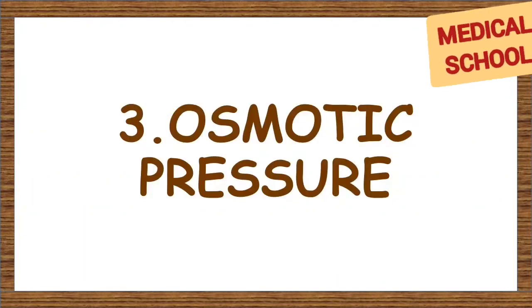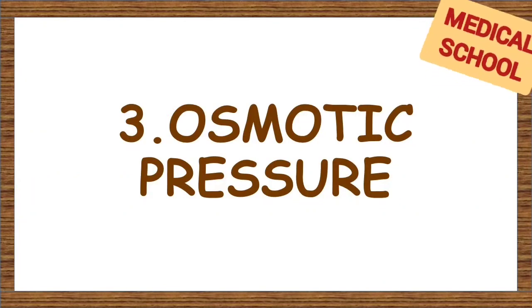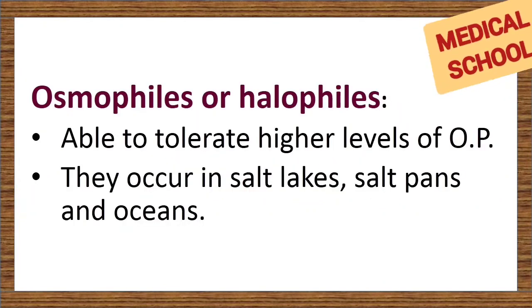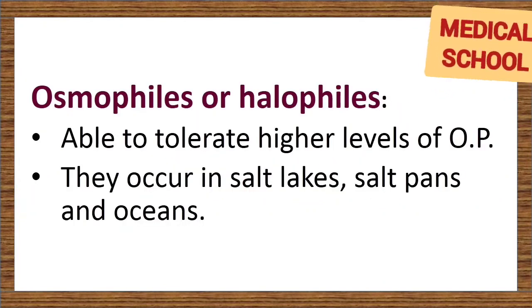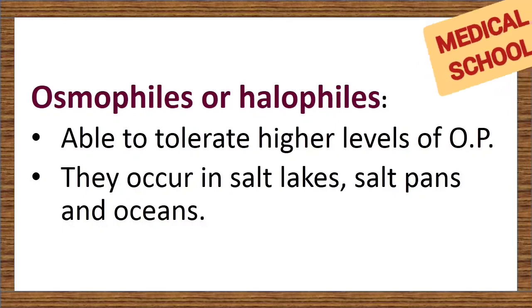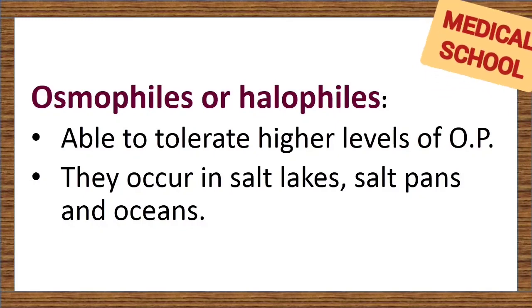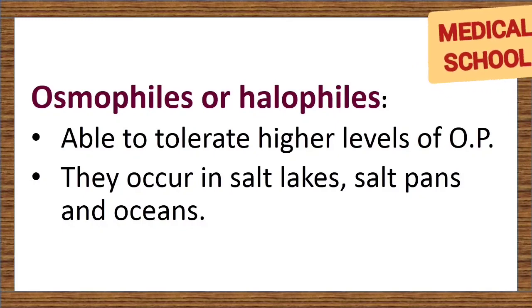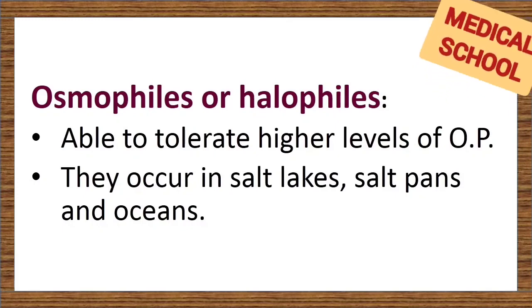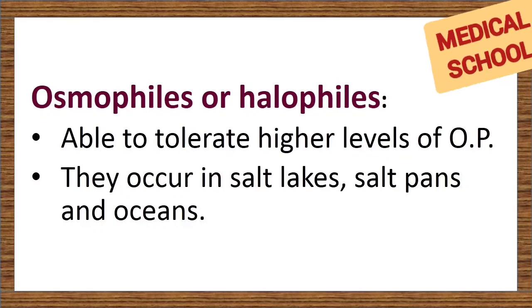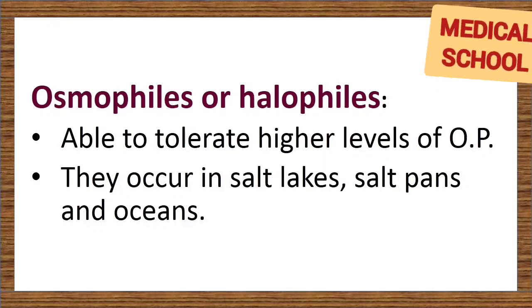Osmotic pressure. Some microbes are able to tolerate higher levels of osmotic pressure while others cannot. Those that can tolerate high osmotic pressure are known as osmophiles or halophiles. They occur in salt lakes, salt pans, and oceans.